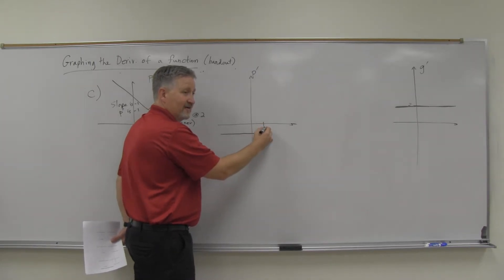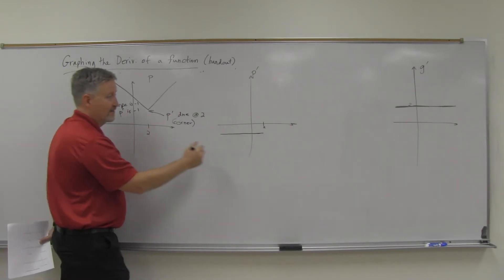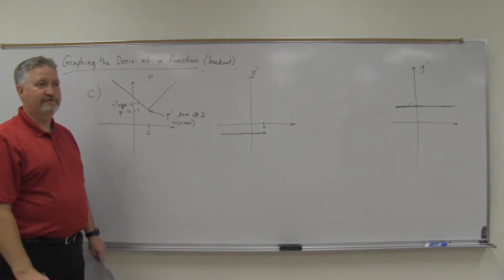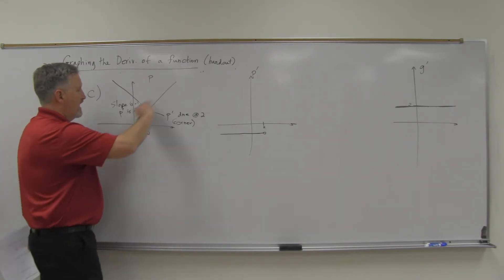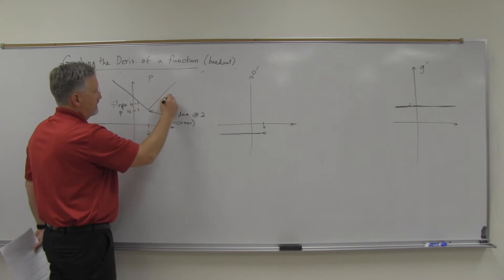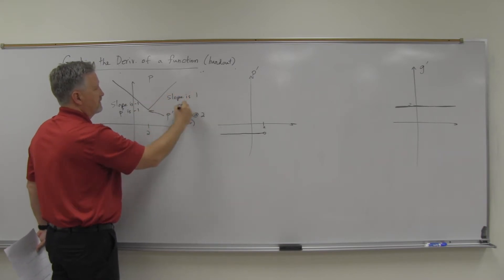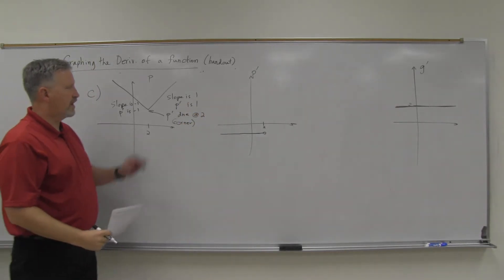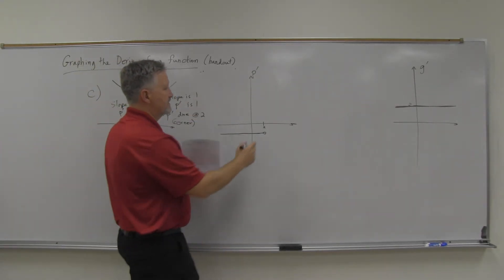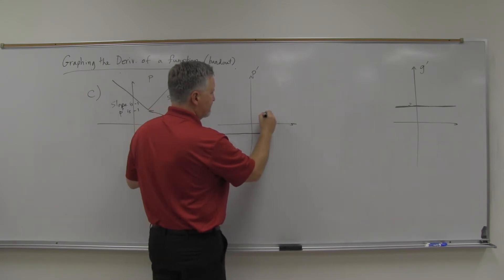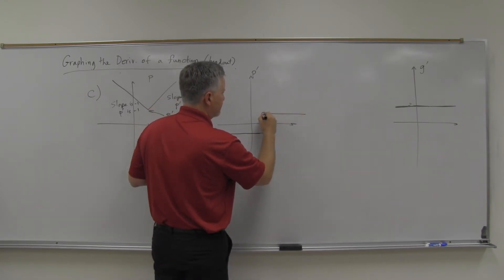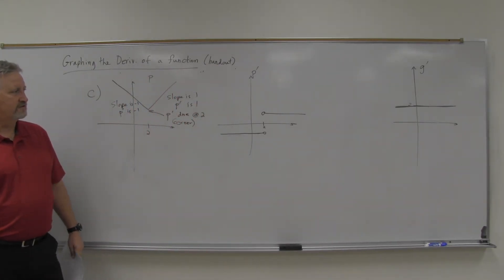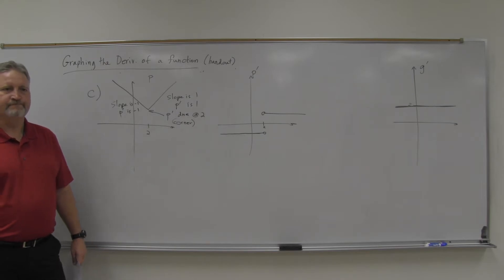That negative one horizontal line continues until we get to x equals two, where the derivative does not exist. So I put an open dot there. After two, the slope is about positive one, so P prime equals one — a constant positive value all the way across. So you've got the open dots on either side of two at x equals two, one horizontal line at negative one on the left and one at positive one on the right.